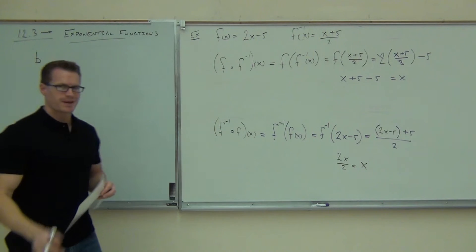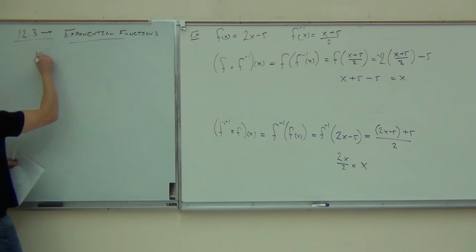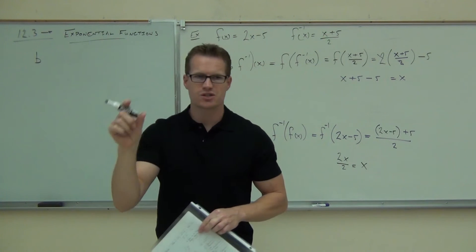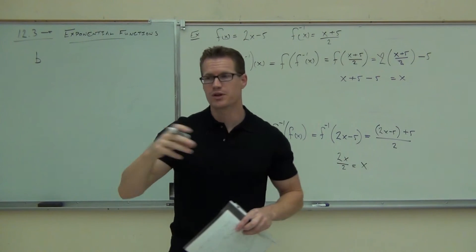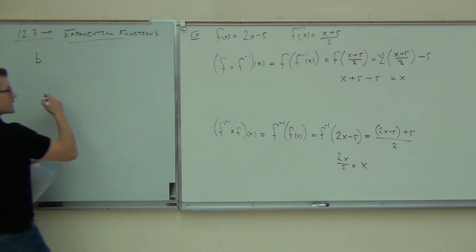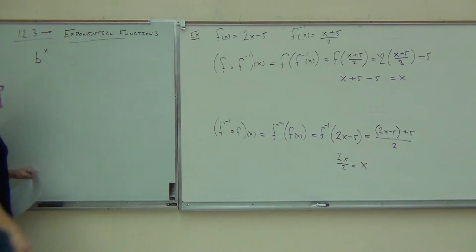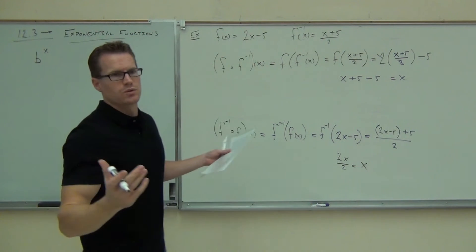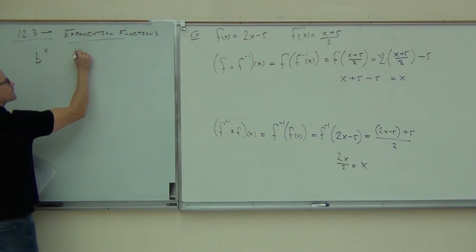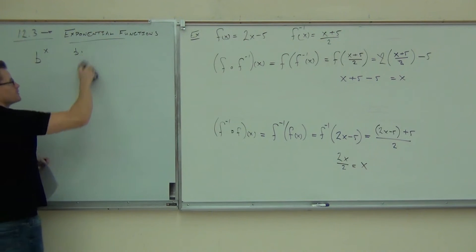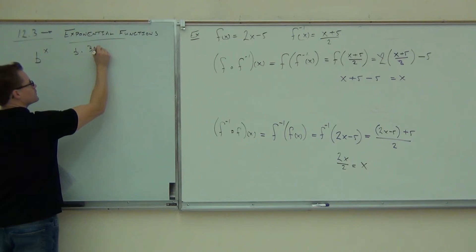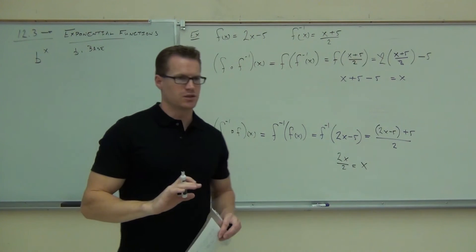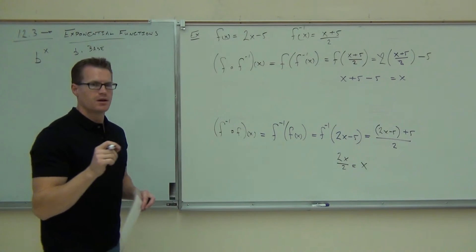Every exponential is of this form. Normally we have X raised to some power — X to the one-half is a square root, X to the third is a cubic, X squared is a quadratic. But now we have an exponent that is our variable. B is called the base — it's a number like two, five, or one-half. B does not change for your exponential — whatever I give you, it stays fixed.